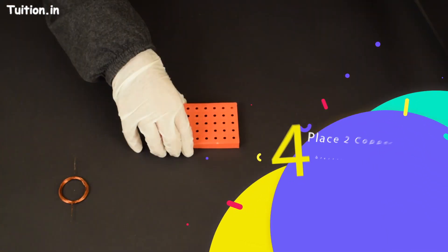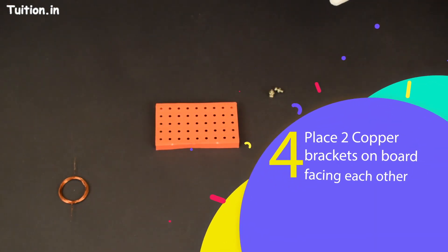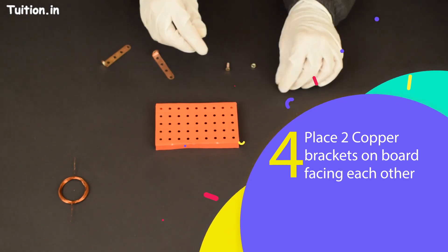Place two copper brackets on board facing each other, leaving two or three holes on the board.